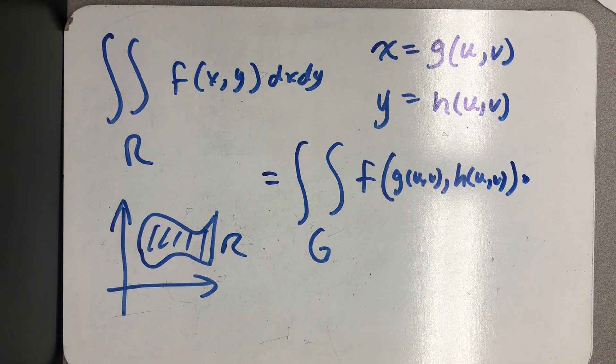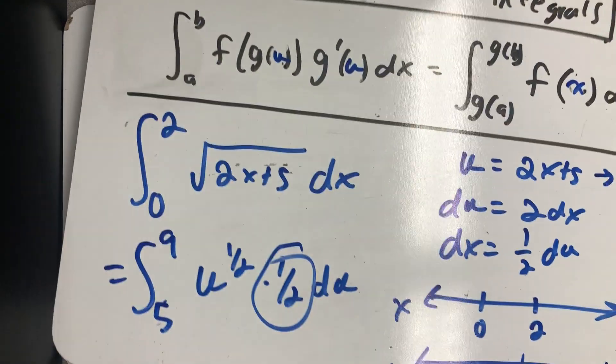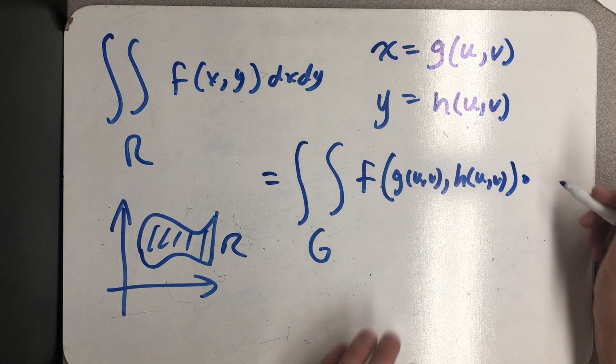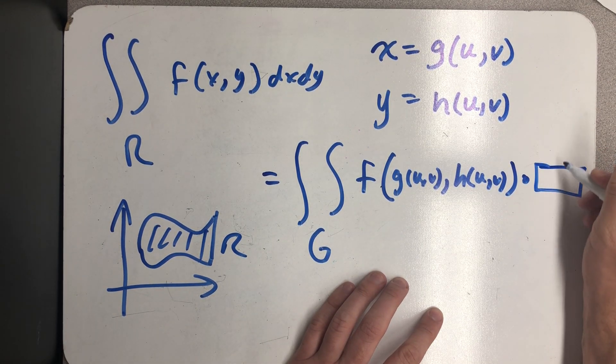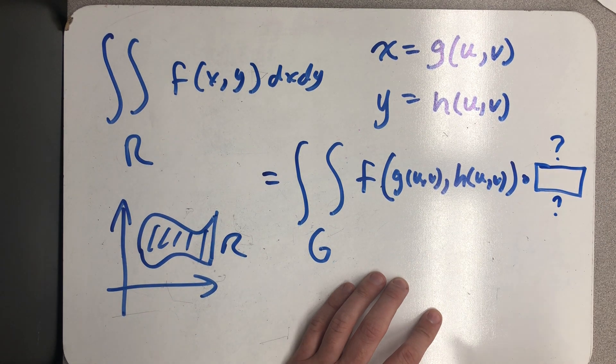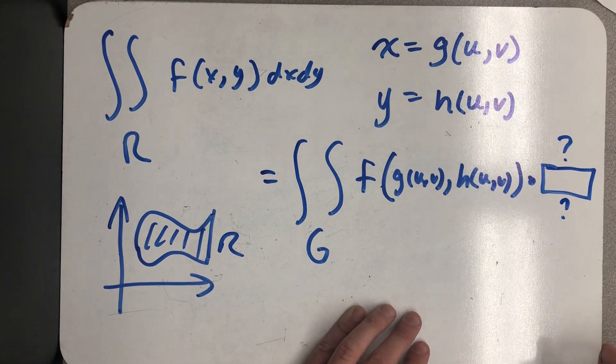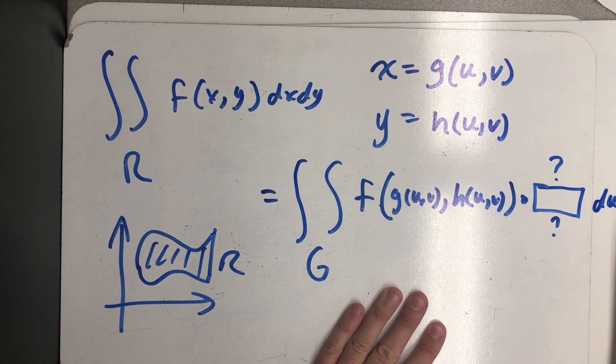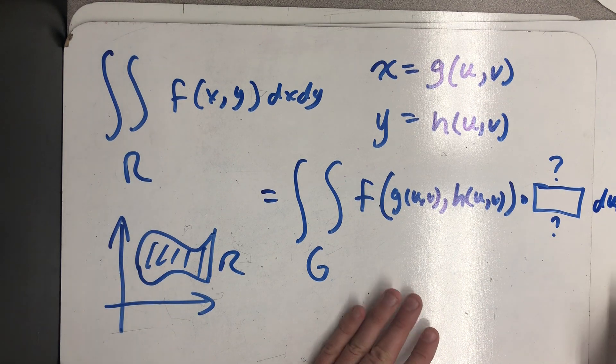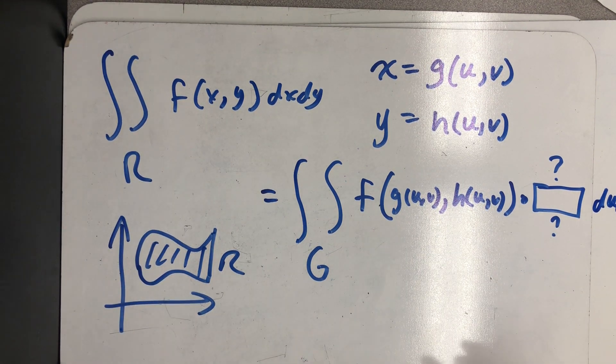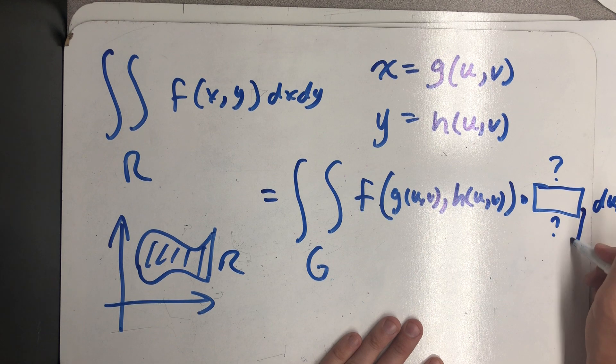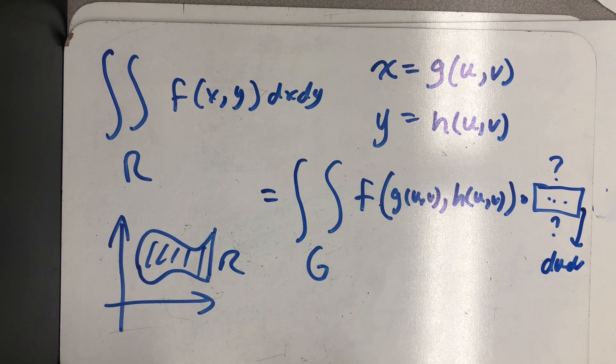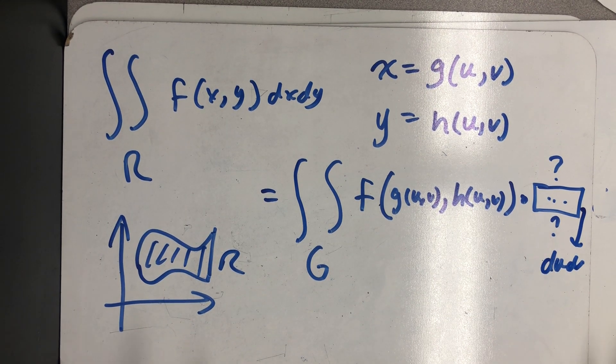And so hopefully I will end up with a double integral over some region that I'm going to call G of f of (g(u,v), h(u,v)). I plug these in, and now this function is on u and v. Times, well, if it behaves like this, it's going to need to be times some scaling factor. So I'm just going to leave a blank there for a moment. I need to figure out what goes there. And then du dv. So that's the scaling factor I need to figure out what goes there.